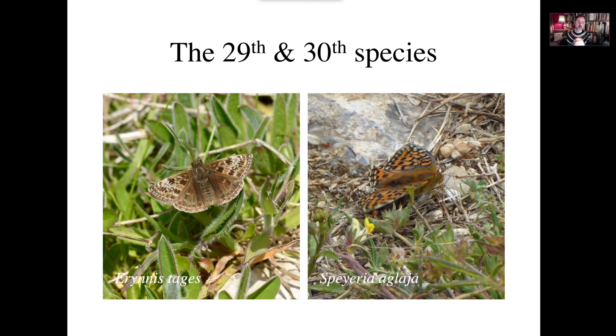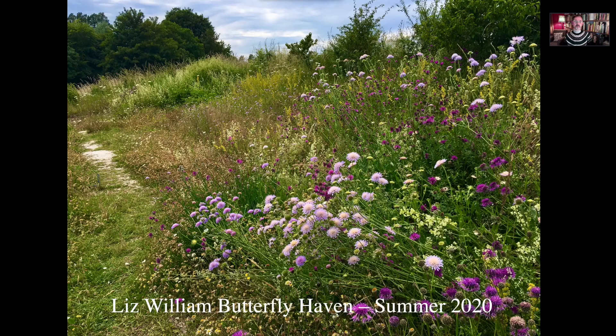These are the 29th and 30th species: the dingy skipper and the dark green fritillary. It's amazing because we now have 81% of all the species of butterfly found in our city on this half-sized football pitch. It just goes to show what you can do if you get things right. And that's what it looks like in the summer of 2020 — there are patches which are really good for butterflies and also a whole host of other invertebrates.